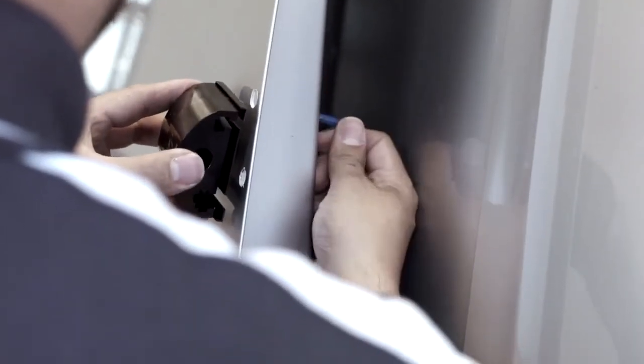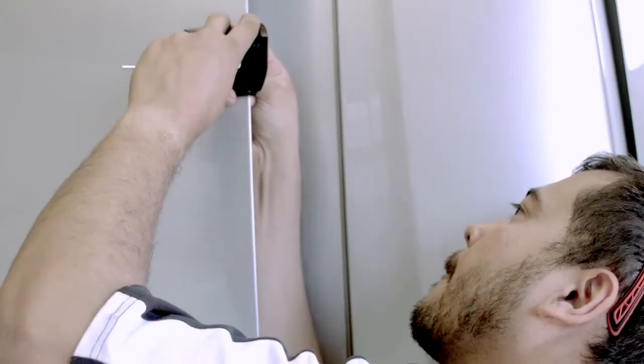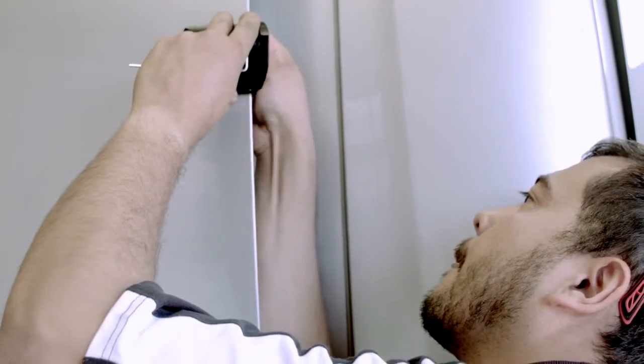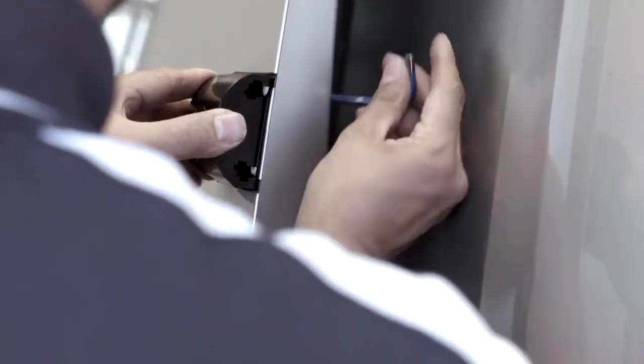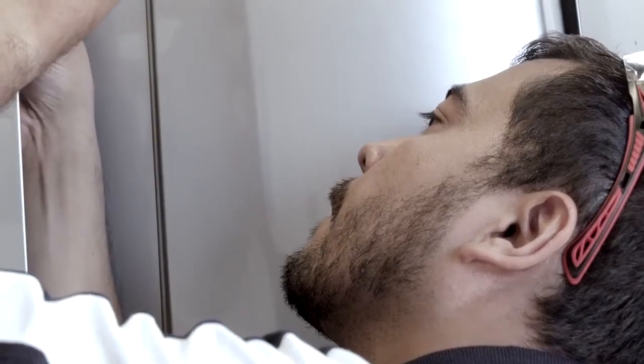Holding the lock and gasket in position, pass the socket head bolt, serrated washer and large flat washer through the access hole and into one of the fixed hole positions, not fully tightening. Repeating the process for the other fixed hole position, we can move on to the slotted positions.